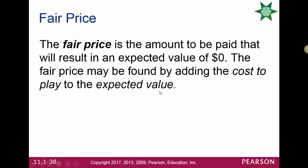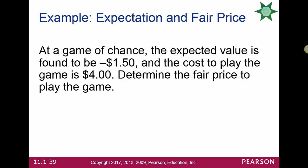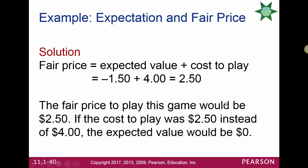The fair price is the amount to be paid that results in an expected value of zero. It is found by adding the cost to play to the expected value. At a game of chance, the expected value is negative $1.50 and the cost to play is $4. Adding these: $4 + (−$1.50) = $2.50, which is the fair price to play the game. If the cost to play were $2.50, the expectation would be zero.